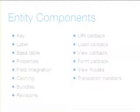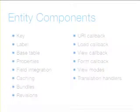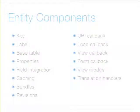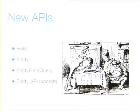We also need a concept of caching. An entity might have bundles — nodes have content types as bundles, users don't use bundles. Entities might have revisions — nodes have revisions, users don't. We need consistent ways to say where is this thing located, what's the path to it, how do you load it, how do you view it, how do you get to the edit form. We need to declare callbacks for those things. And then there are view modes — nodes have teaser and full view modes — and translation handlers.